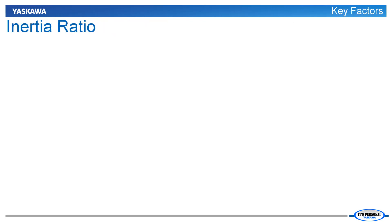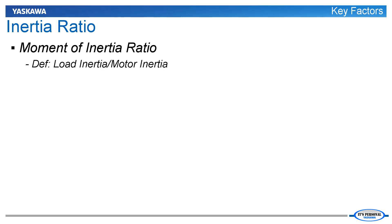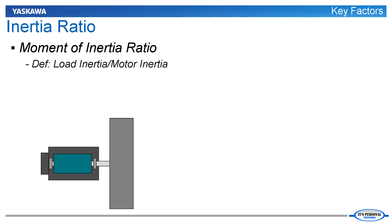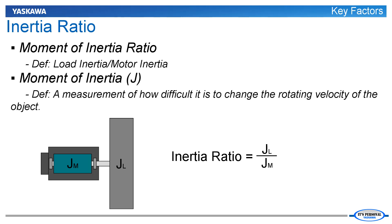The first key sizing factor is the moment of inertia ratio. The entire moment of inertia in a servo system can be divided into two parts: the motor inertia and the load inertia. The moment of inertia ratio is the load's moment of inertia divided by the motor's moment of inertia. Any rotating object has a moment of inertia — a measurement of how difficult it is to change the rotating velocity of that object. When sizing, the moment of inertia is often written with the letter J and is commonly referred to simply as inertia.